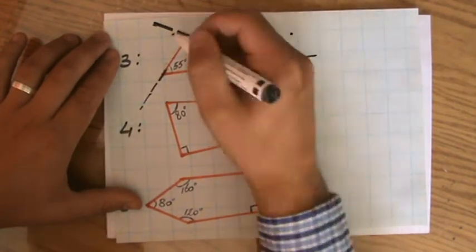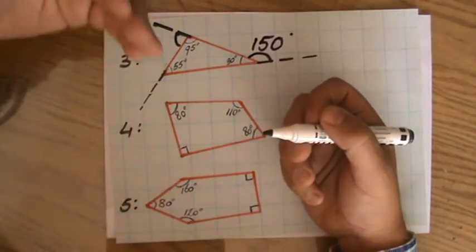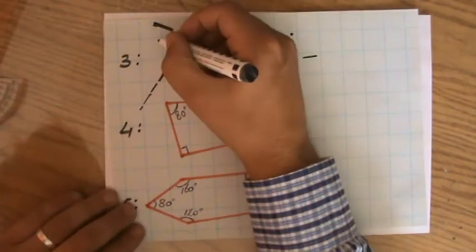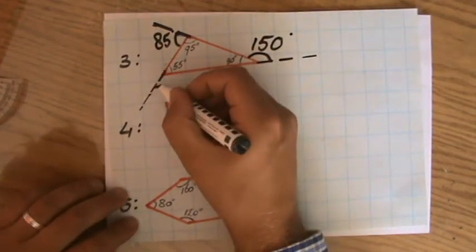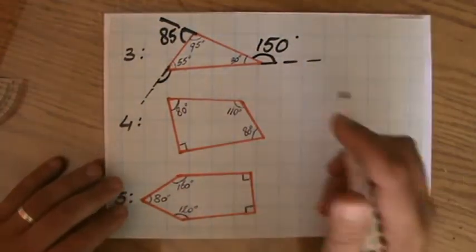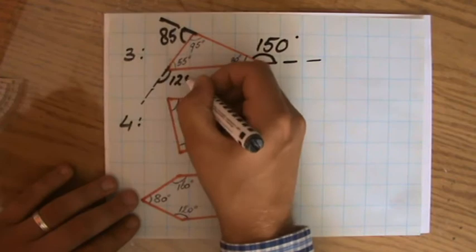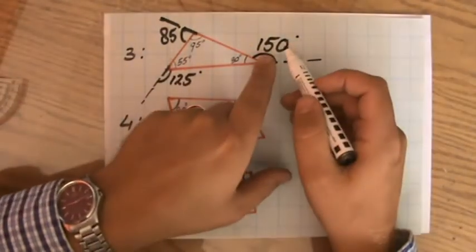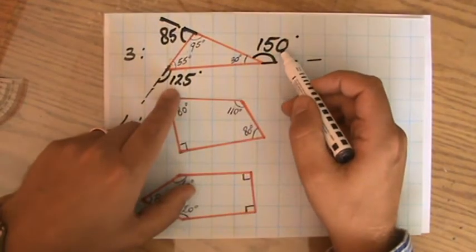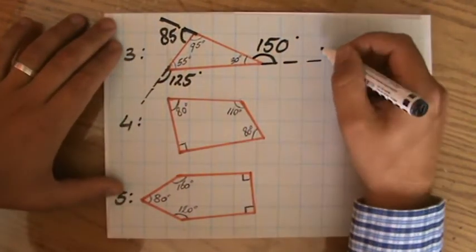If this interior angle is 30 degrees, that means this exterior angle is 180 minus 30, so that's 150 degrees. If the interior angle is 95, the exterior angle is 180 minus 95, which is 85. And 55 for an interior angle makes the exterior angle 125 degrees.